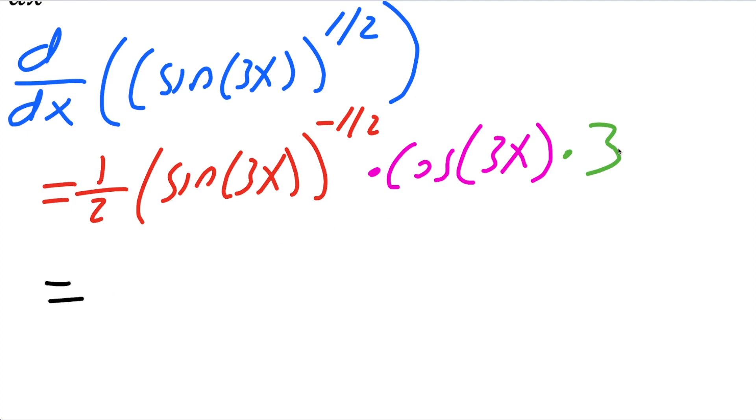So we will get 3 times 1 half is 3 divided by 2. This says sine, parentheses, 3x, close parentheses, raised to negative 1 half. So that can go in the denominator. And if you want to have your square root, you can do that. So sine, parentheses, 3x, close parentheses.